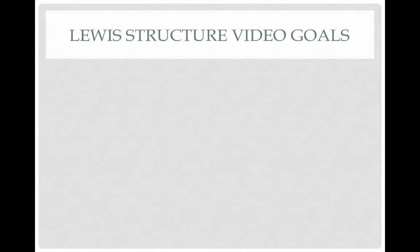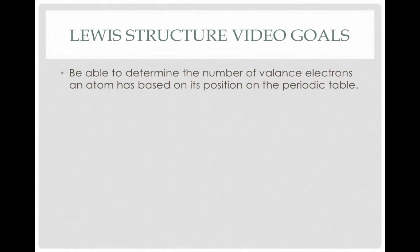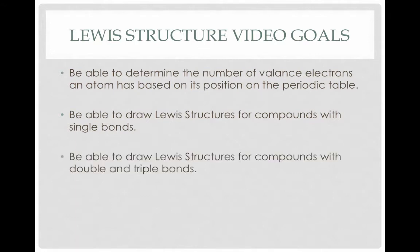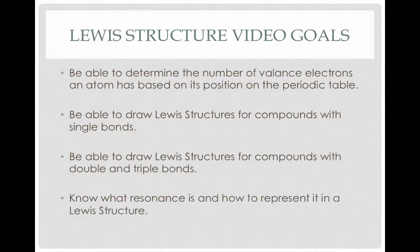Welcome to Unit 9, Video 1: Lewis Structures. By the end of this video, you should be able to determine the number of valence electrons an atom has based on its position on the periodic table, draw Lewis structures for compounds with single bonds and with double and triple bonds, and know what resonance is and how to represent it in a Lewis structure.